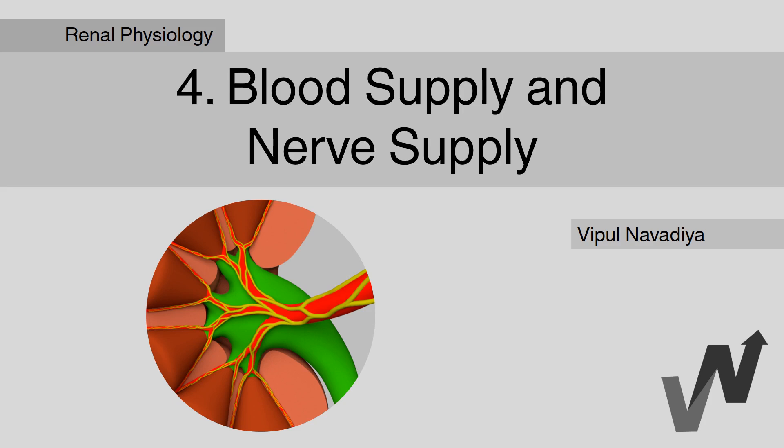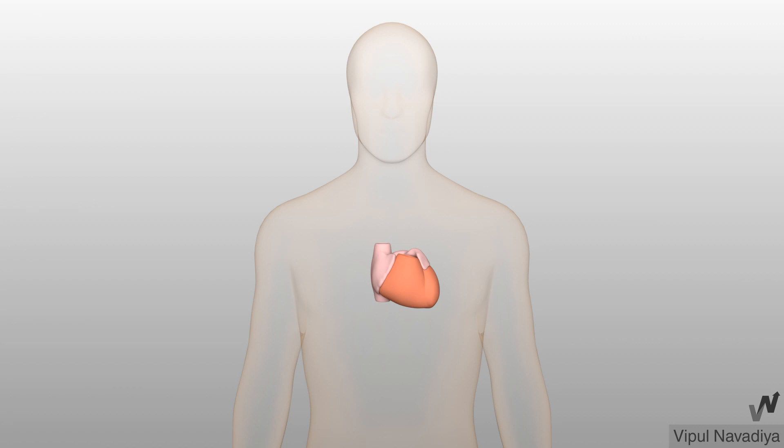In this video, we will see blood supply and nerve supply of the kidney. Let's start with blood supply first.